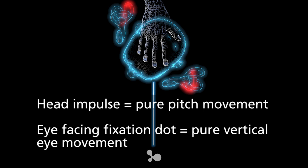When you measure torsional eye movement, you need to do it at a slower frame rate to pick up the torsional component. We are using 250 hertz to pick up the catch-up saccades, and therefore at a higher frame rate we cannot measure the torsional component. So we want to make sure that we have just a pure vertical eye movement.